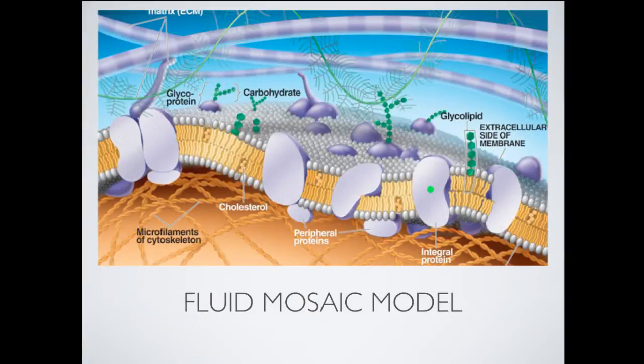So, let's get on into it with the fluid mosaic model. Now, like it says down there at the bottom, it's all about movement. Usually we think of membranes as being fairly, not rigid, but static, meaning that they don't change very much. They might wave in and out a little bit, but they don't really do a whole lot of movement.